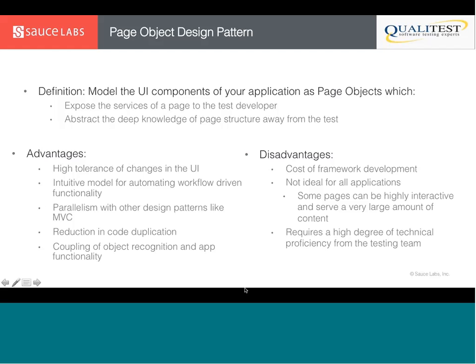Basically we want to model the UI components of the application under test as page objects. These page objects serve two important purposes: first, they expose the services of a page to the test developer — essentially becoming an API into the functionality of the user interface. Performing a task or action against the application is as simple as invoking a method against the page object.